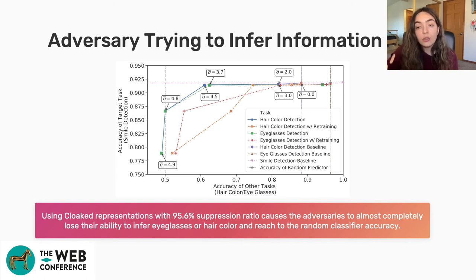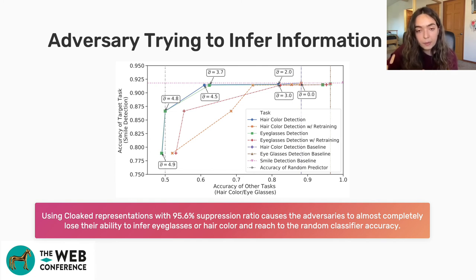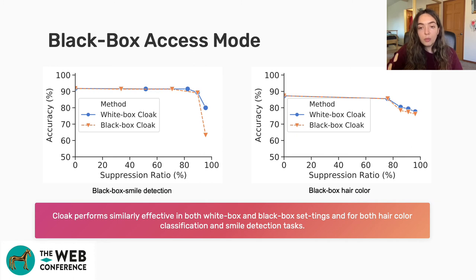In a more practical experiment, we mount attacks where an adversary tries to infer attributes other than smile from Cloak representations. The main task is smile detection, so Cloak generates representations allowing high utility for that task while hiding other attributes. The x-axis shows the main task accuracy and the y-axis shows adversary accuracy on other tasks. With 95.6% suppression ratio, the adversary's classifier becomes almost random at near 50% accuracy, showing that sensitive information cannot be inferred from cloaked representations.